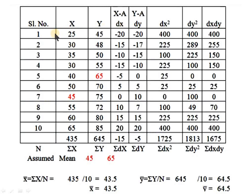We have 10 data points. The x values are: 25, 30, 35, 30, 40, 50, 45, 55, 60, 65 — giving a total Σx of 435. The y values are: 45, 48, 50, 55, 65, 70, 75, 72, 80, 85 — giving a total Σy of 645.